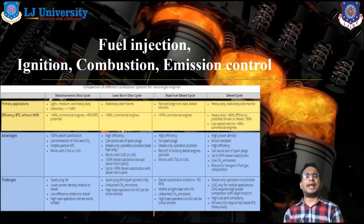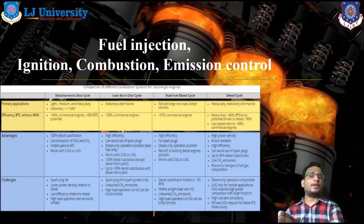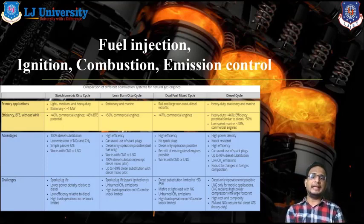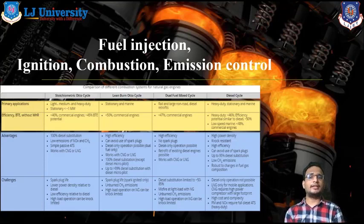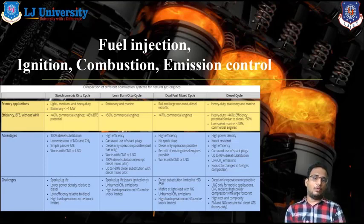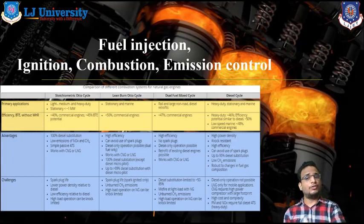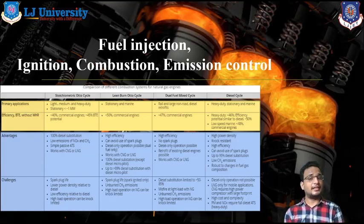Here you can see the primary applications of the auto-cycle, lean-burn auto-cycle, diesel fuel mix cycles, and diesel cycle. I compare all these in one table so you can clearly understand how we use these cycles for natural gas engines. Stoichiometric auto-cycle engines are used in medium and heavy vehicles; lean-burn auto-cycle engines are used in stationary and marine applications; dual fuel mix cycles are used in railway and large on-road diesel locomotives; and diesel cycle is also used in heavy duty engines, stationary engines, and marine engines.